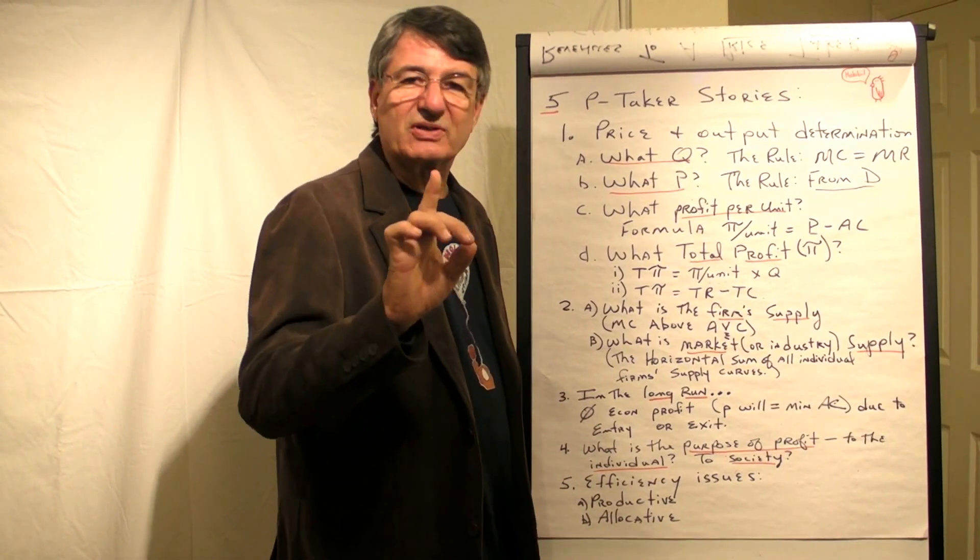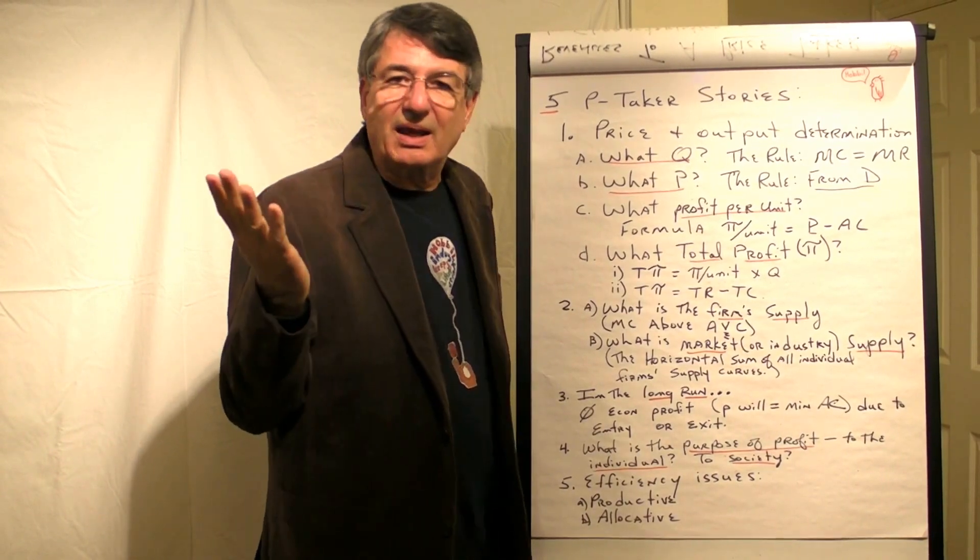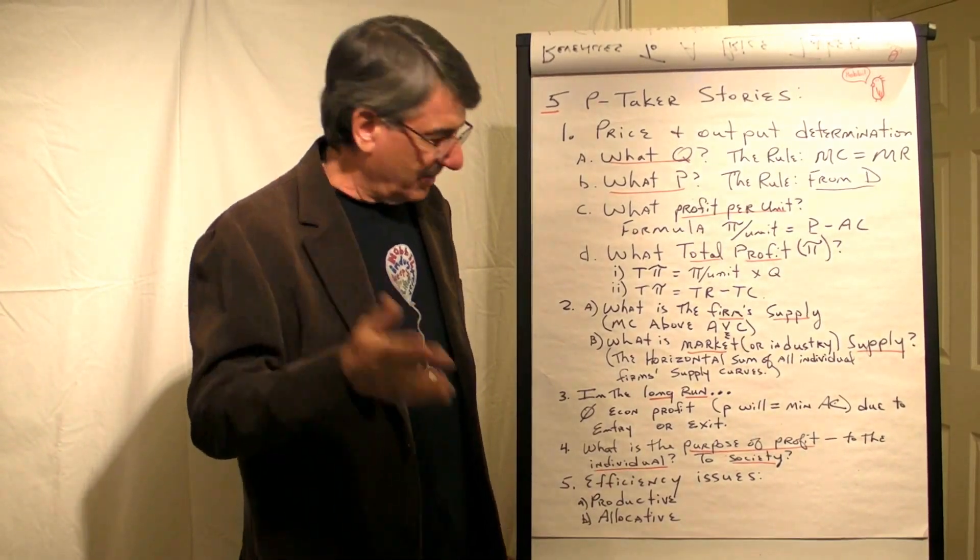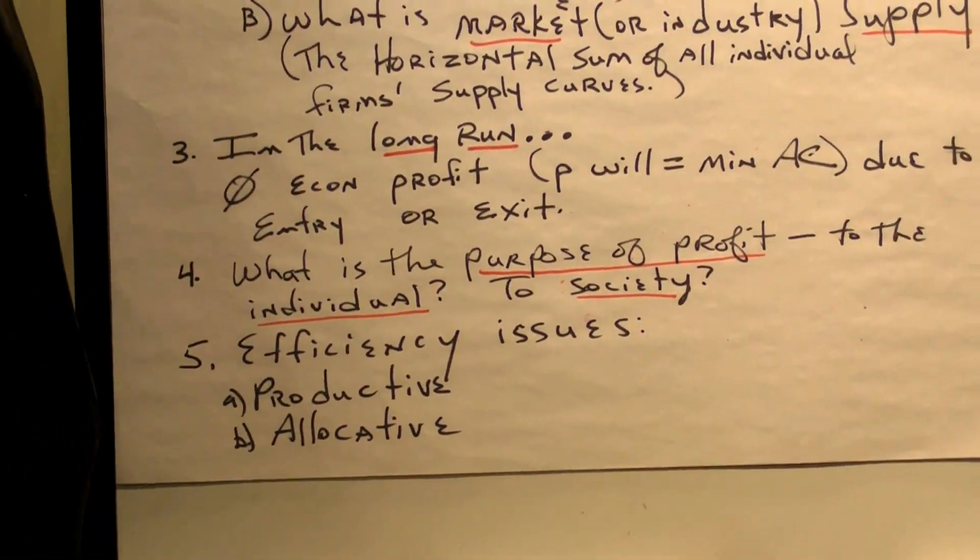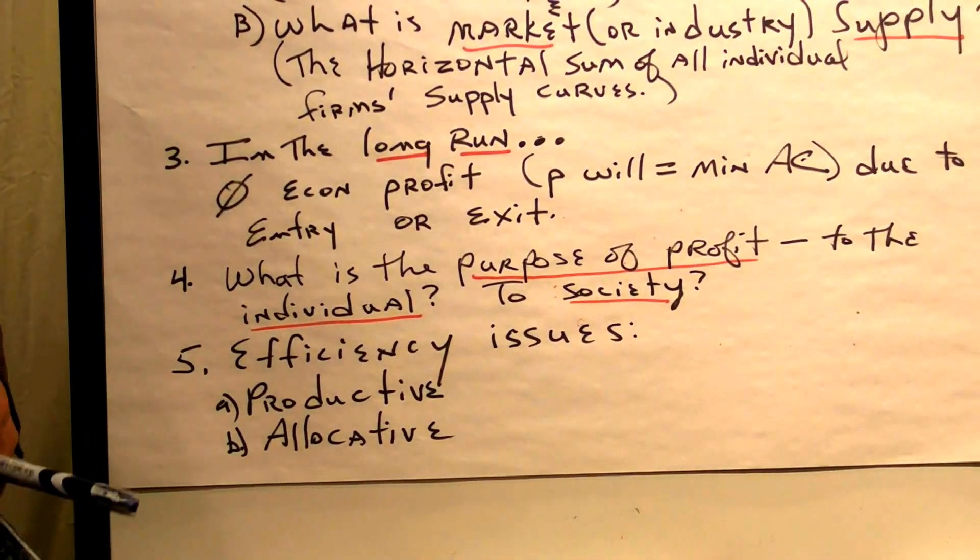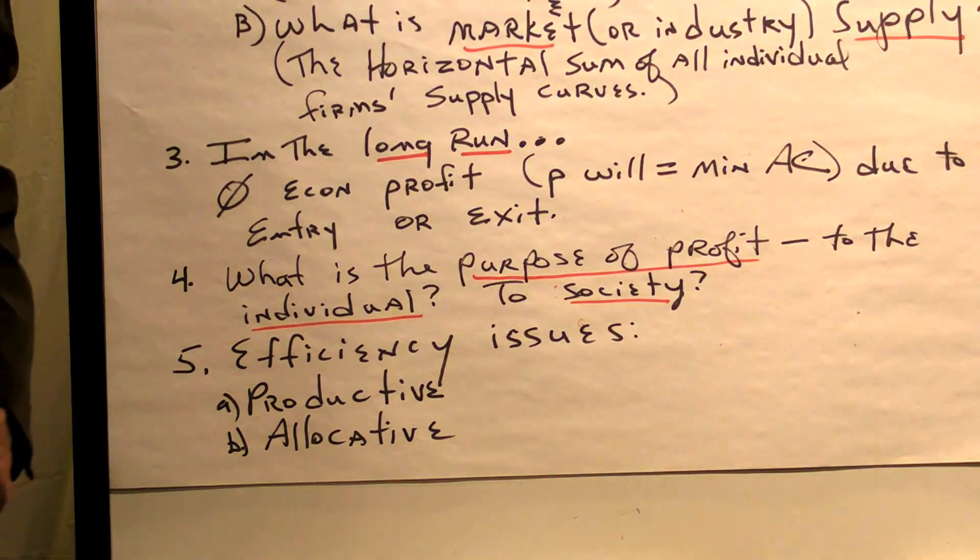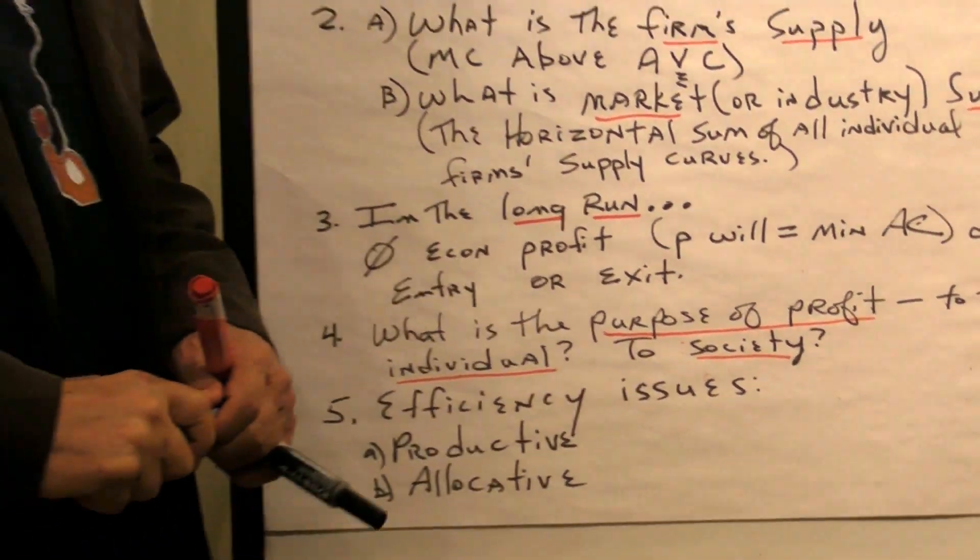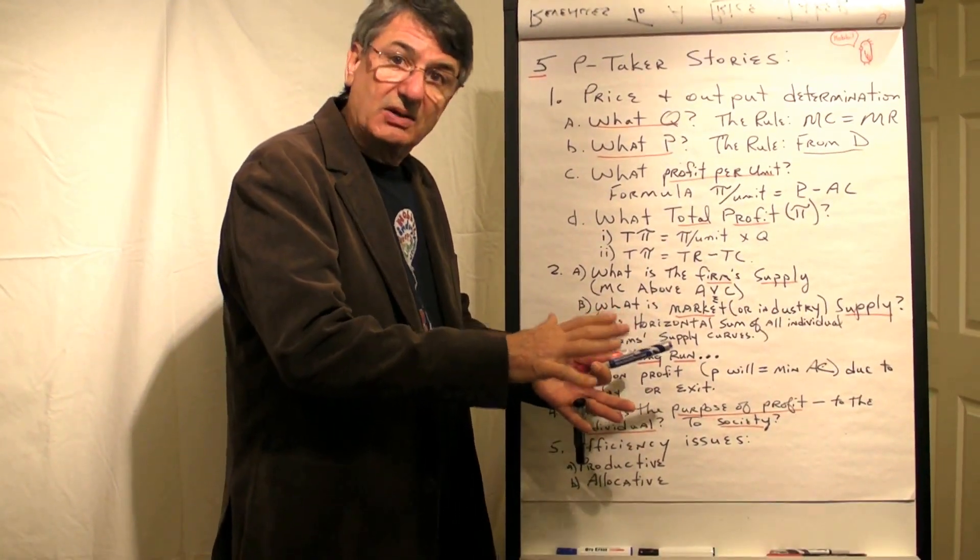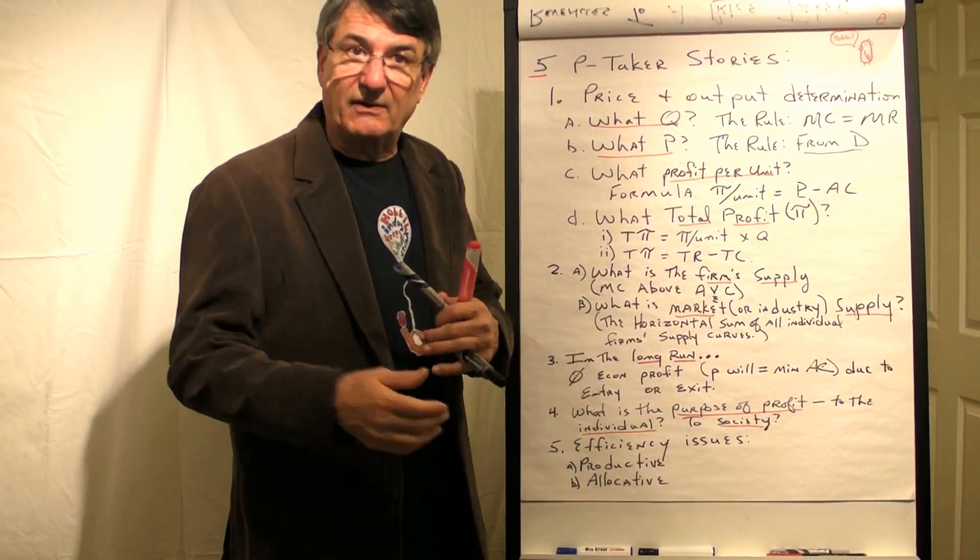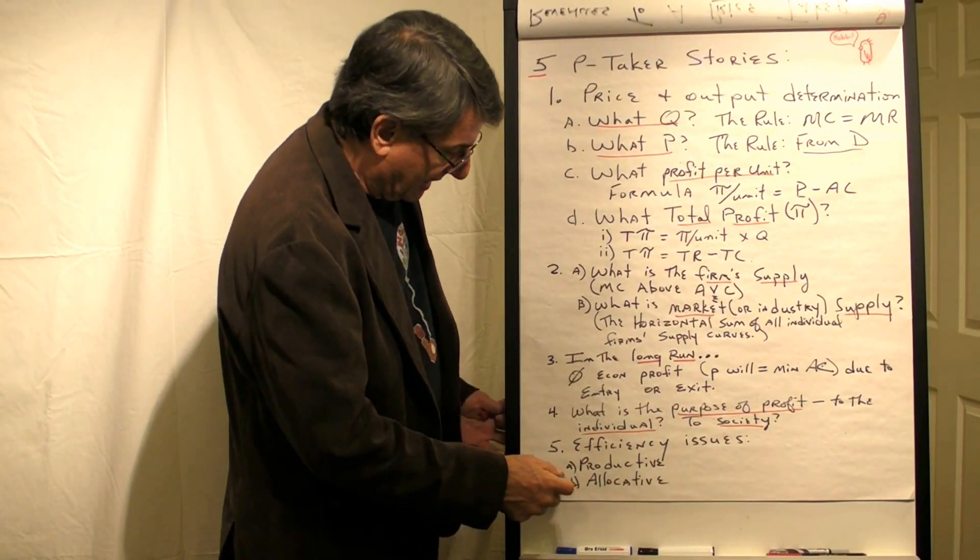What is the purpose of profits to the individual? So they can get wealthy and do whatever they do. But the purpose of profits to society is very different. The purpose of profits from society's point of view is to allocate resources to their highest valued uses, and to give people an incentive to move resources they control from lower valued uses to higher valued uses.